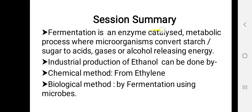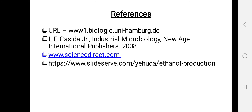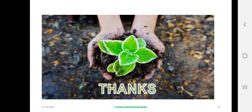To summarize: fermentation is an enzyme-catalyzed metabolic process where microorganisms convert starch or sugar to acids, gases, or alcohol, and in the process energy is released. Industrial production of ethanol can be done by two methods — either by chemical method from ethylene, or by biological method by fermentation using microbes. Thank you.